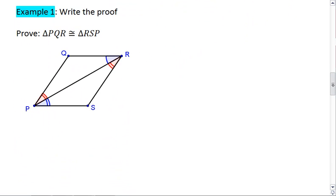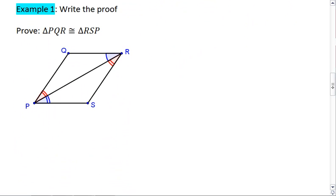Which brings us to our first example. So given the diagram below, I want you to prove that triangle PQR is congruent to triangle RSP.